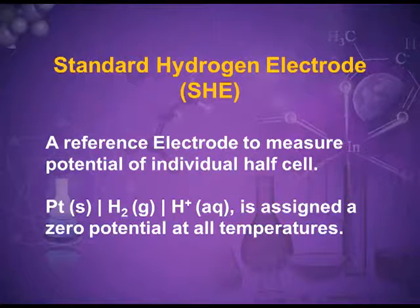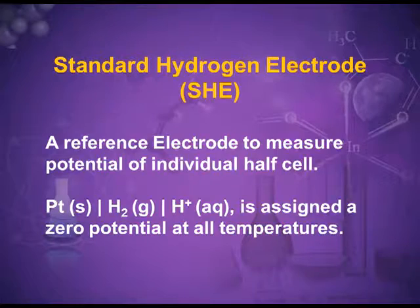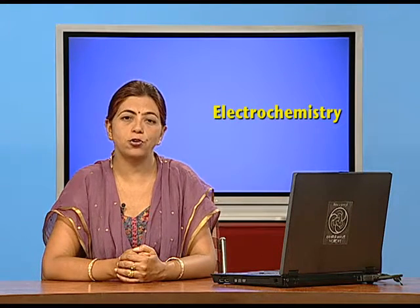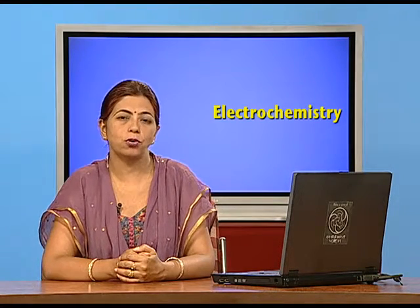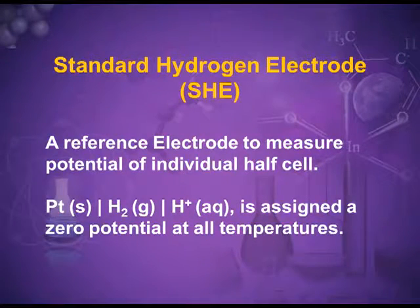Dear children, the cell potential calculated using the formula E_cathode − E_anode is a relative value, not an absolute value. To measure the absolute value of electrode potential we need a reference electrode. The Standard Hydrogen Electrode, or SHE, is universally accepted as a reference electrode. It is also called NHE. It is a reference electrode used to measure the potential of individual half cells, and it has been assigned a zero potential at all temperatures.